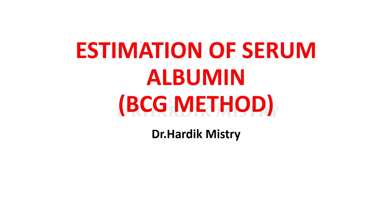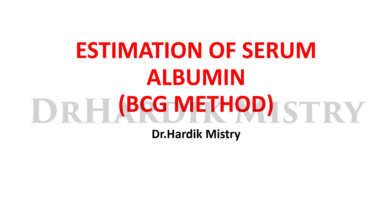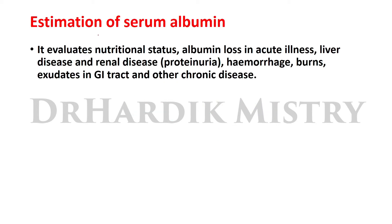Hello dear students, welcome to practical biochemistry. The topic is estimation of serum albumin by BCG method. This test evaluates the nutritional status of a person, and albumin loss in acute illness, liver disease, and renal disease, in conditions called proteinuria, hemorrhagic conditions, burns, exudates in the GI tract, and other chronic diseases.